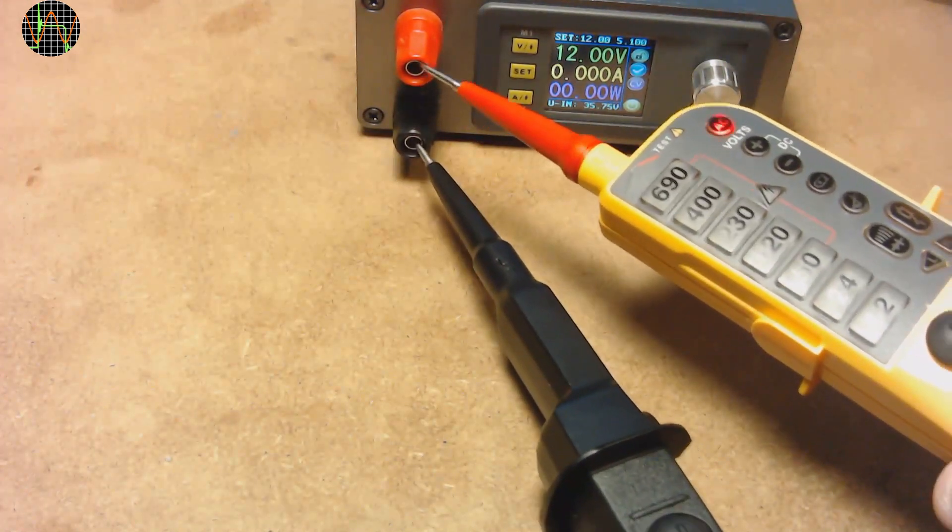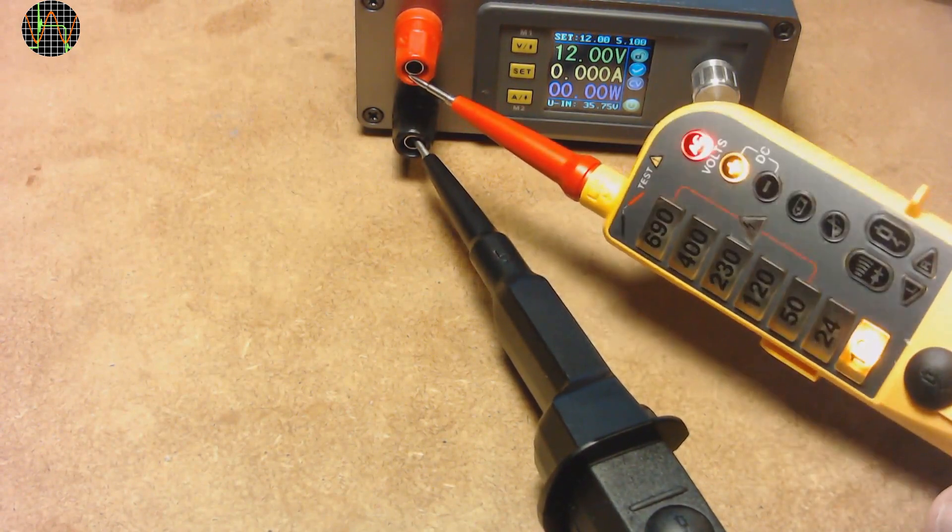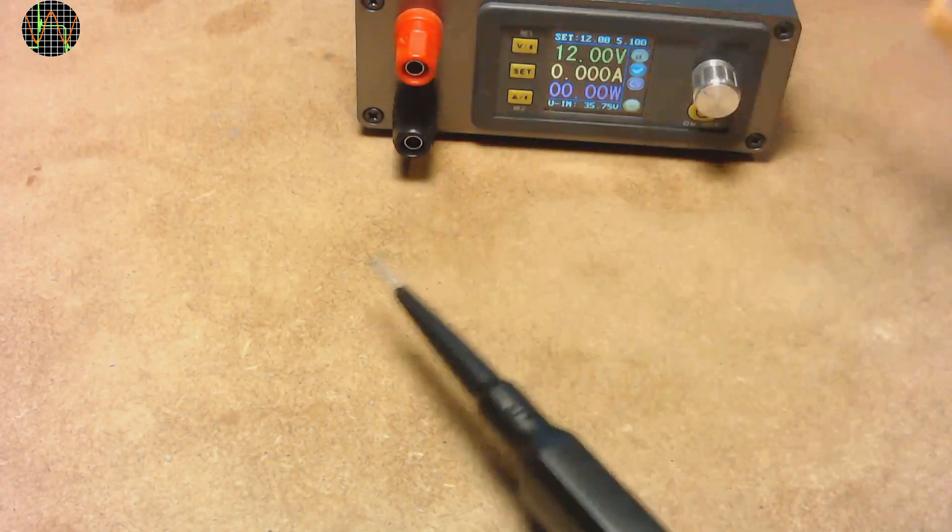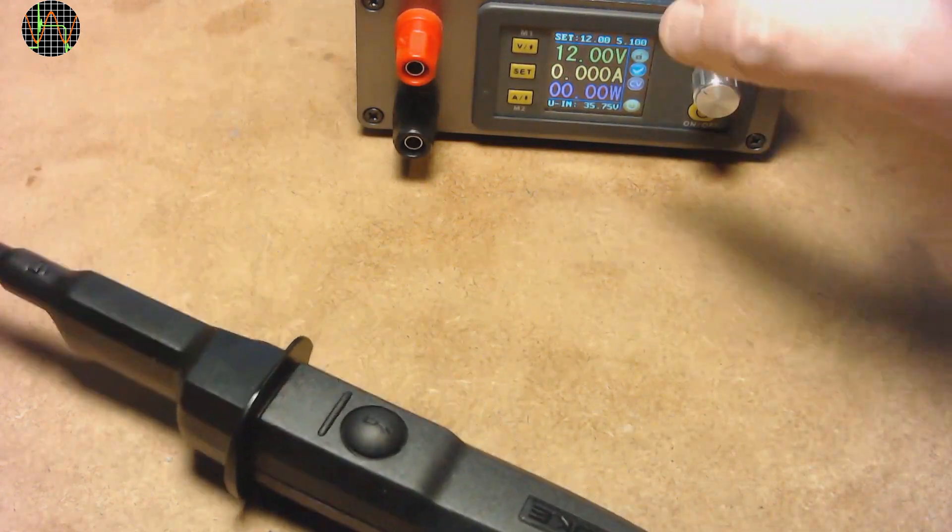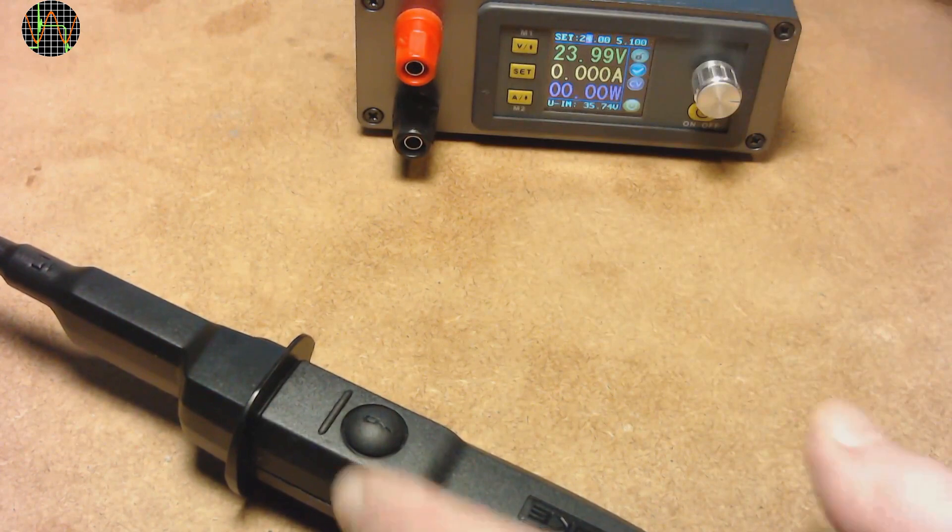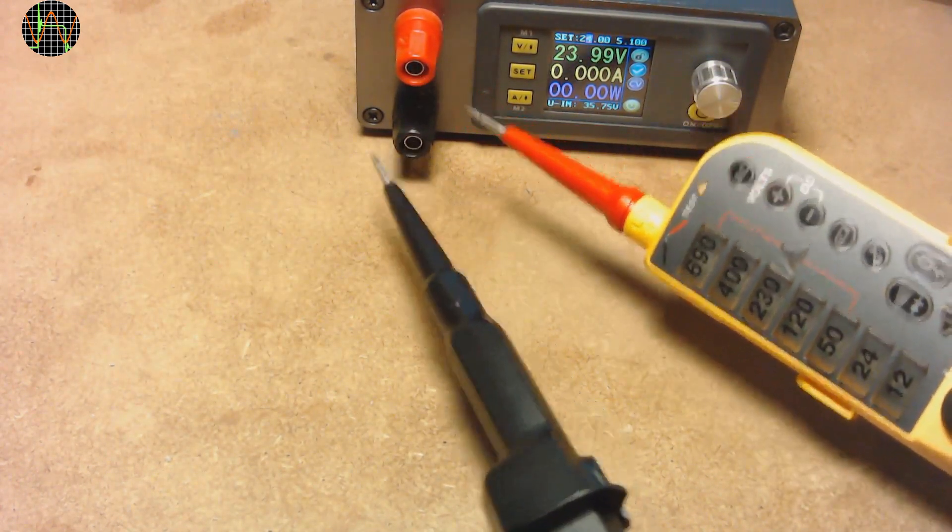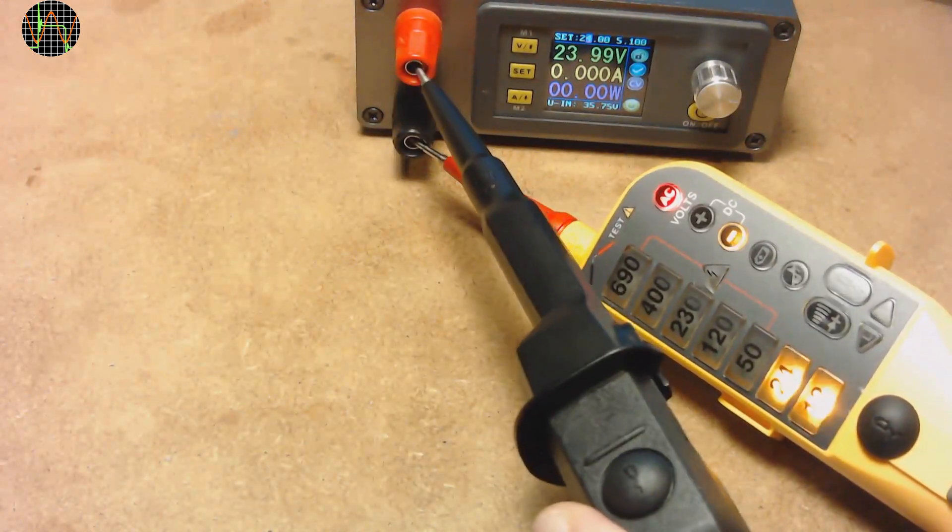So when testing the same 12 volts DC, we now have the AC warning plus the DC polarity and 12 volt light. Changing the voltage to 24 volts DC, and we get the expected 12 volt and 24 volt lights, DC polarity and of course the AC warning.